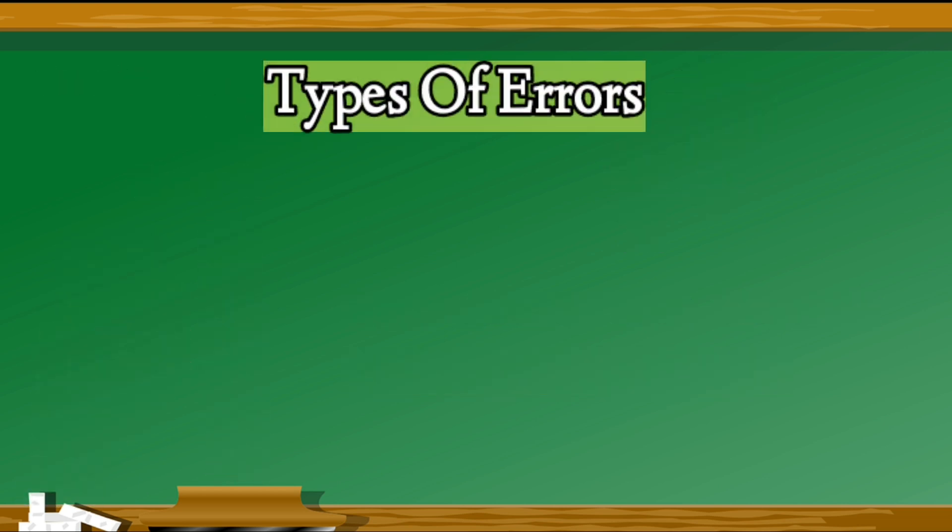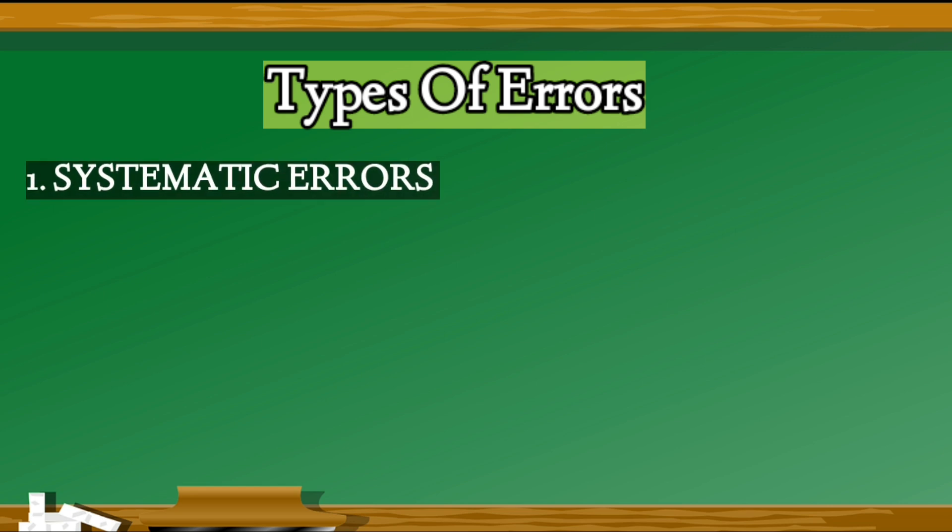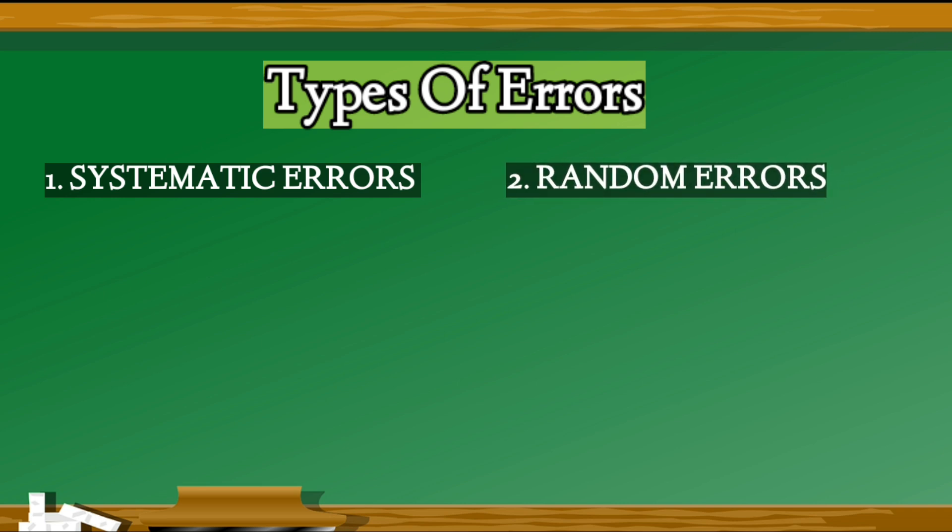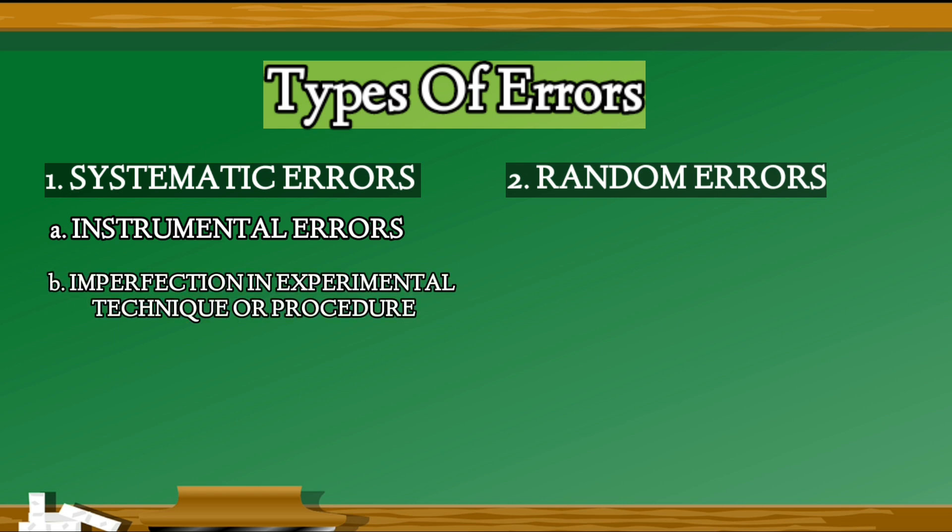Now, let us learn about the types of errors. In general, the errors in measurement can be broadly classified as systematic errors and random errors. Now again the systematic errors are classified as instrumental errors, imperfection in experimental technique or procedure, and personal errors.